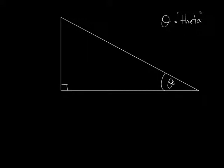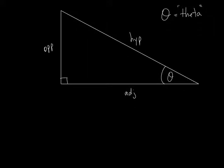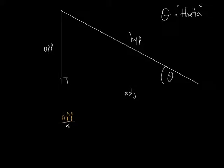Let's say we're talking about this angle theta. The opposite side of angle theta would be the side across from it; the bottom side would be adjacent to theta; and this side would be the hypotenuse because it's opposite the right angle. Now I'm going to introduce you to some new words — some new trig terms — that compare these sides. We're going to compare the opposite side to the hypotenuse.